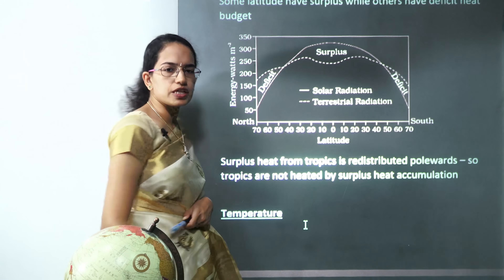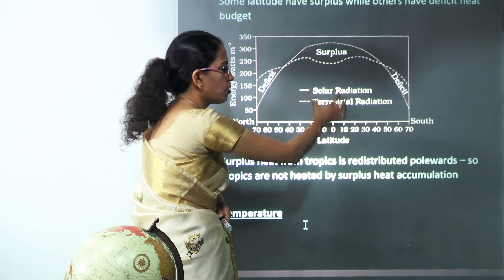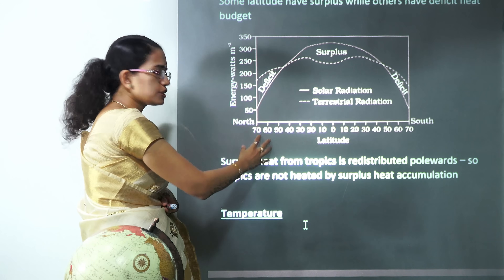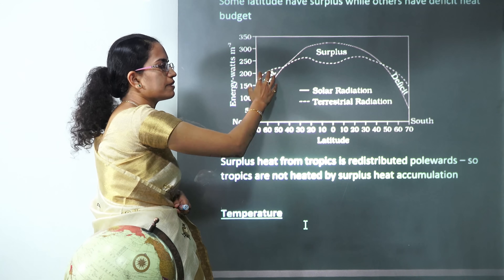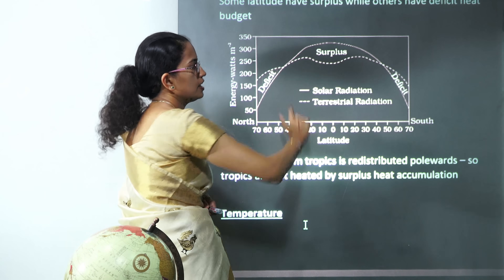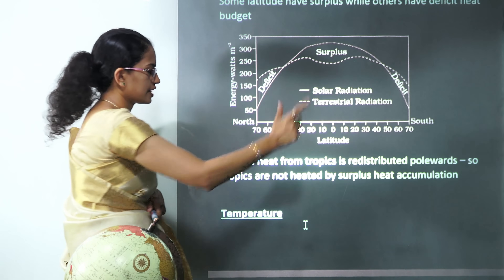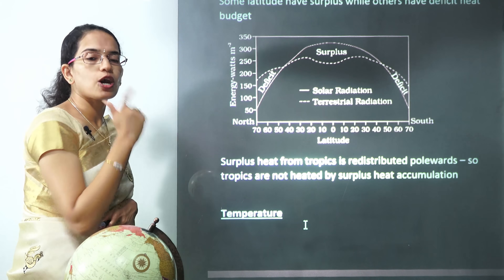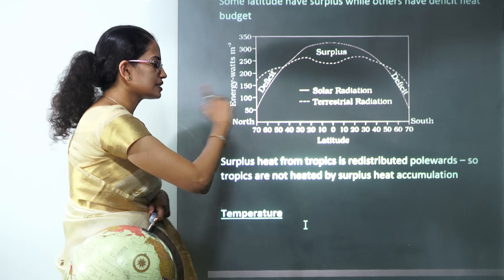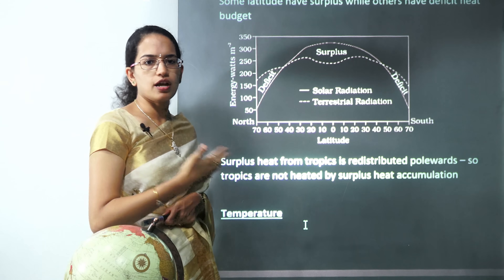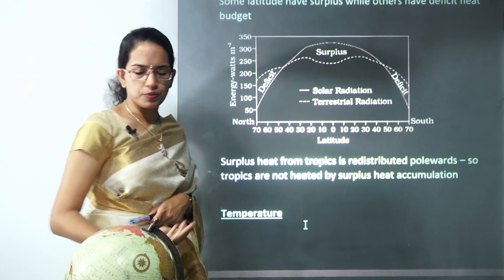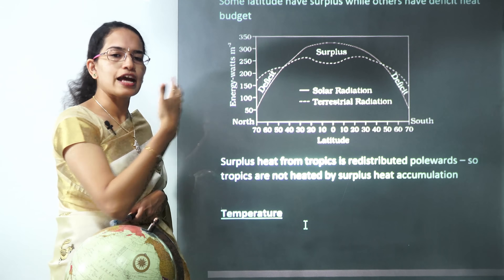The heat budget varies with latitude. The tropics have a surplus energy, while polar areas receive no direct sunlight and have a deficiency. This surplus fills the deficiency, resulting in redistribution of heat across the earth. This redistribution takes place through the four processes of atmospheric heating and cooling: conduction, convection, radiation, and advection.